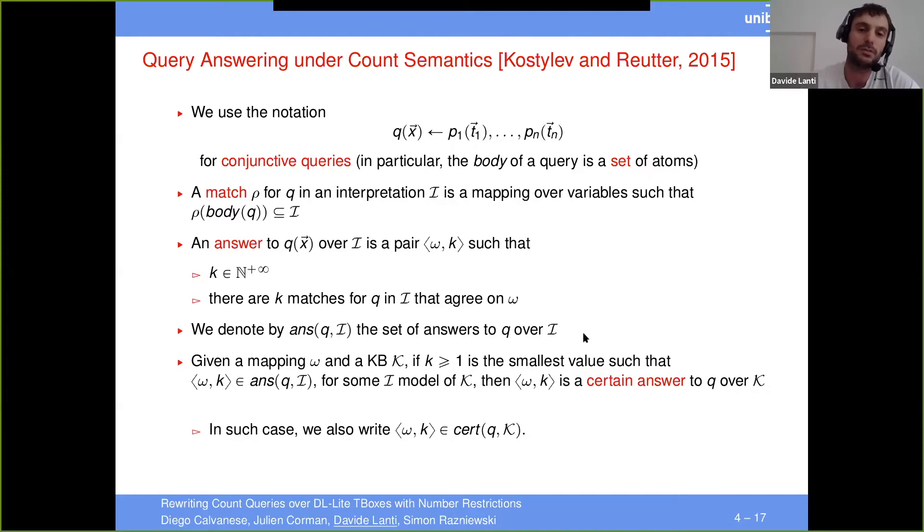By ans(q,I), we denote the set of answers to Q over I. And now here, the notion of certain answers is given a mapping omega and the knowledge base K. If K greater than one is the smallest value such that omega k belongs to the answers of QI for some model I of K, then omega k is a certain answer to Q over K. So this means essentially that there is no model I prime and number K prime such that K prime I prime is also model of K and K prime is strictly less than K. So this is what it means to be a certain answer.